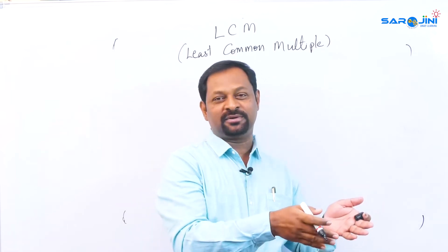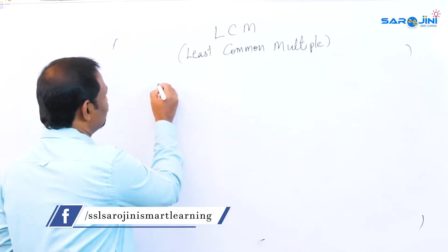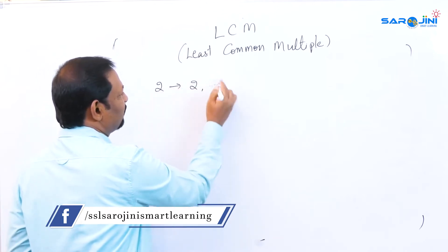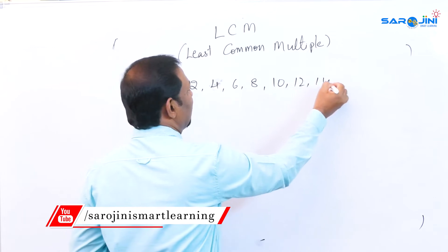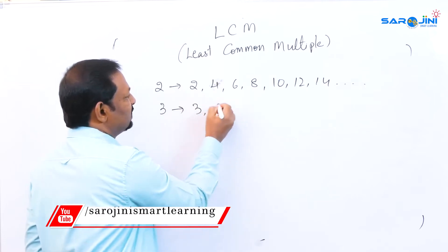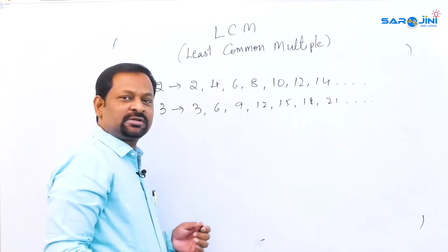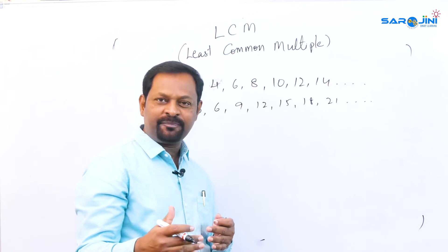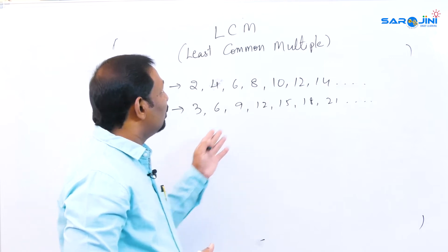First, let's discuss multiples. What are multiples? Suppose I take 2 — the multiples of 2 are: 2, 4, 6, 8, 10, 12, 14, and so on. Suppose I take 3 — the multiples of 3 are: 3, 6, 9, 12, 15, 18, 21, and so on. Multiples are nothing but the multiplication table of that number — from 1 to as many numbers as we can write.